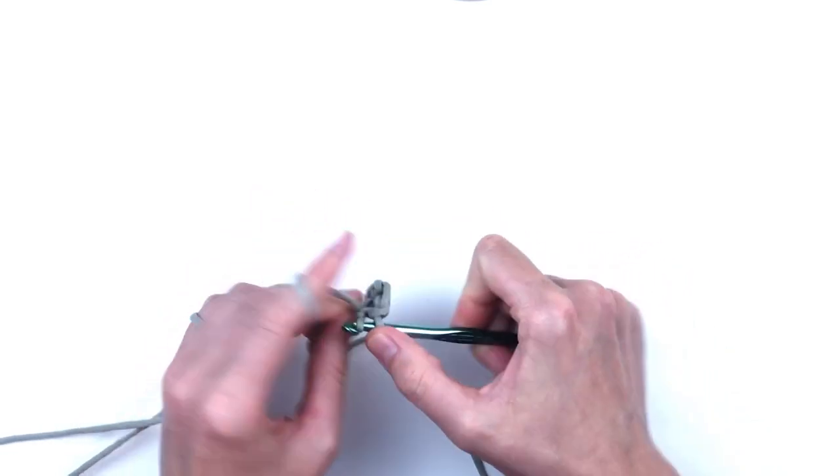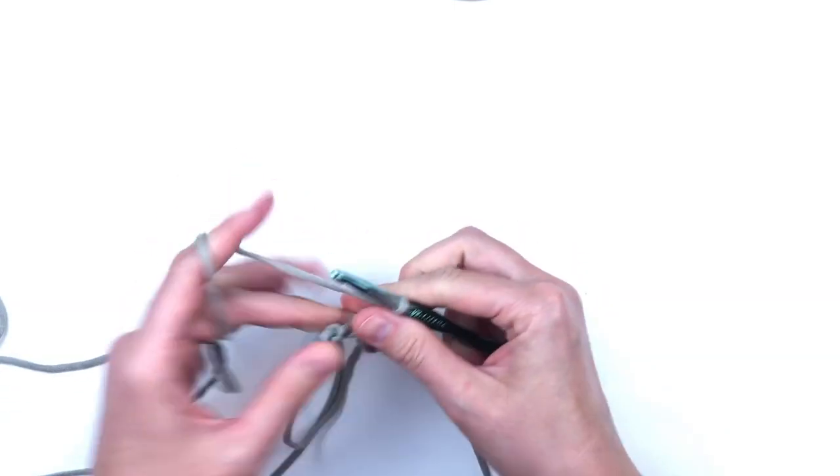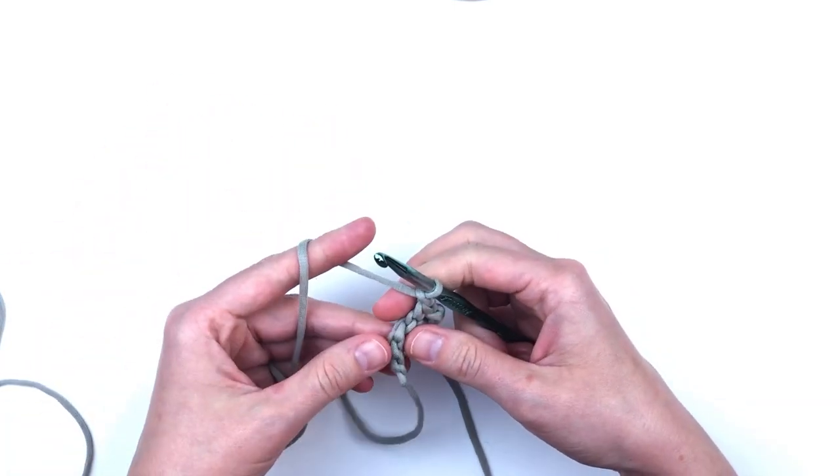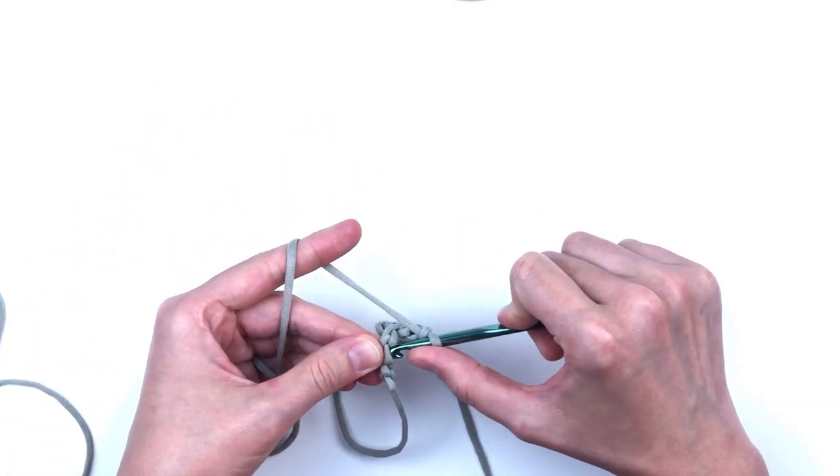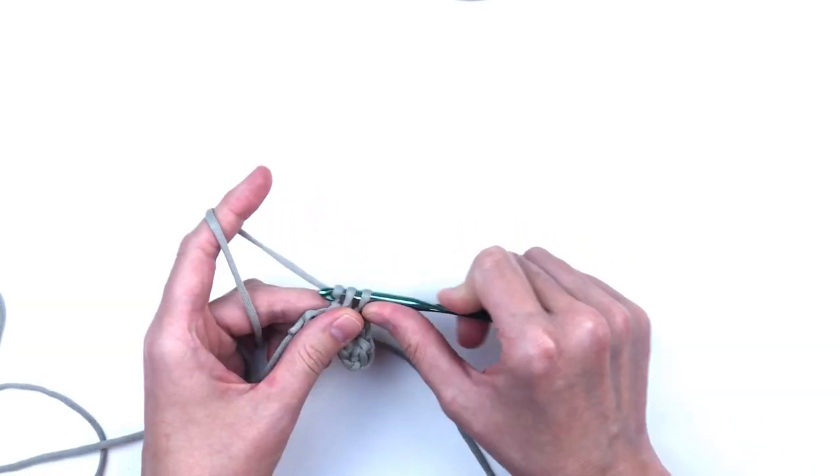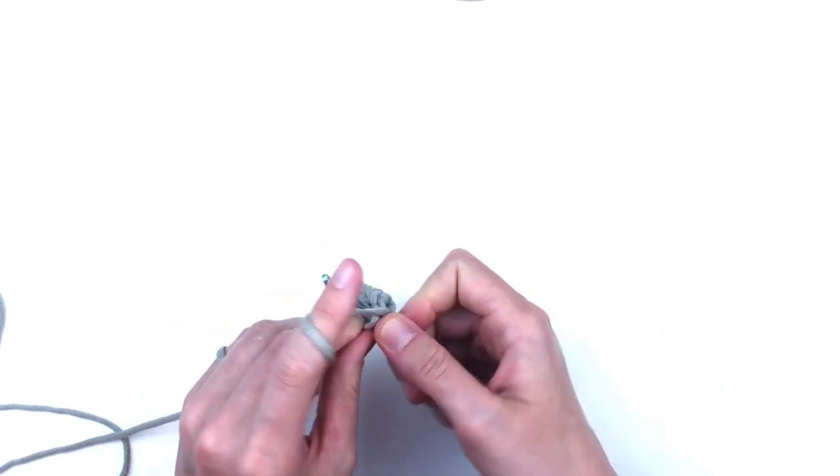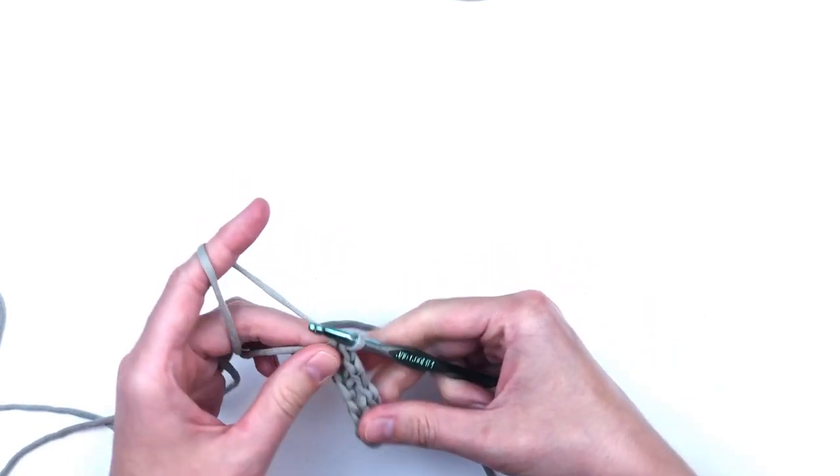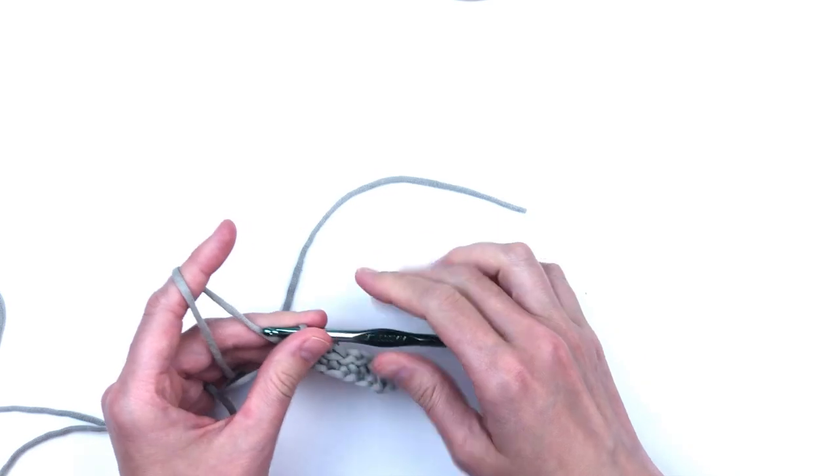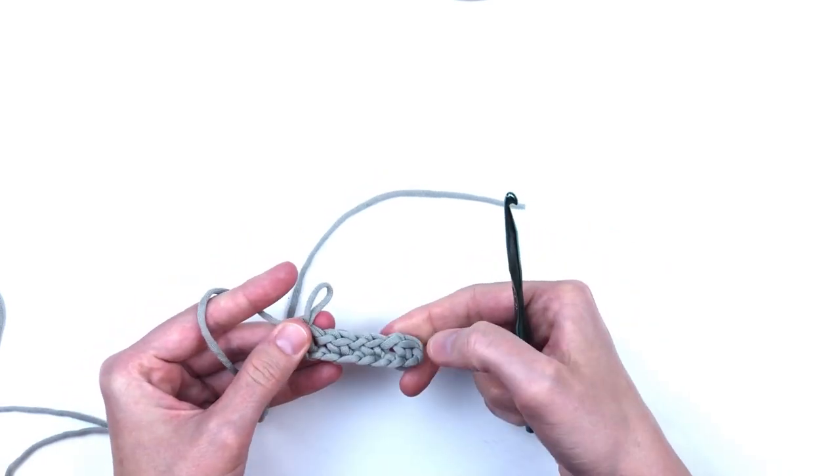Skip one chain and make a single crochet, chain one in the next space. Skip a stitch and make a single crochet, chain one. Skip the next space, make a single crochet, chain one, and in the very last stitch make a single crochet. You should have four single crochets when you go back and count.